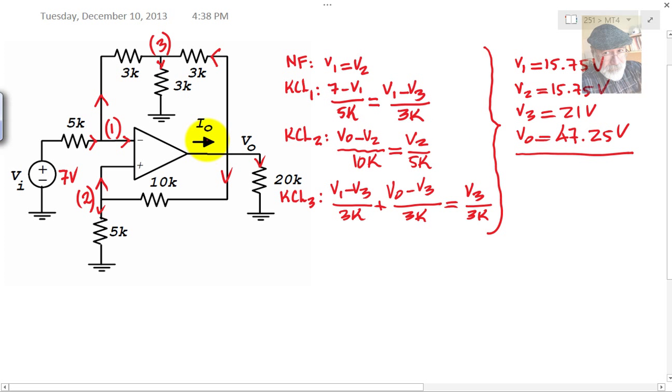What is the output current I0? Well, for that, now that we know V0, we apply KCL to this Gauss surface, and we say that I0 is the sum of three currents. This current in the load, V0 divided by 20 kilos, plus this current, plus the current on the top.